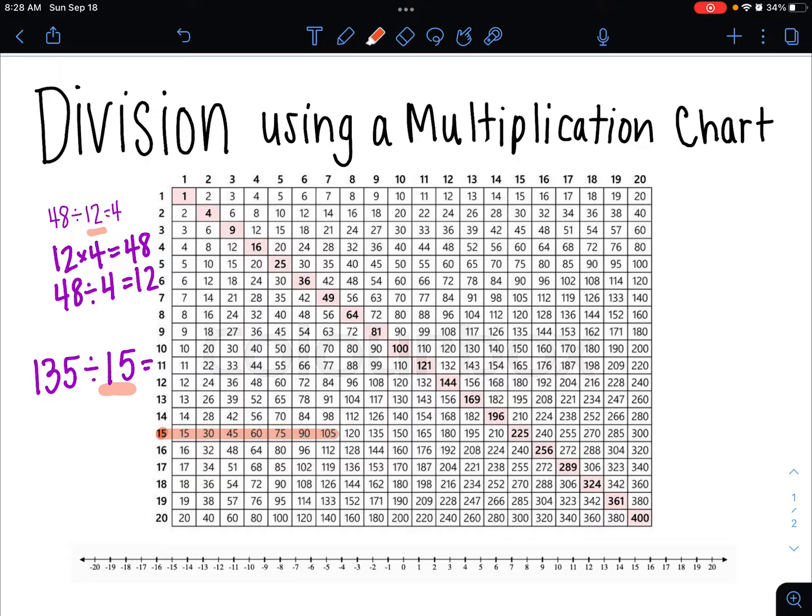45, 60, 75, 90, 105, 120. Oh, there's 135. So we're looking straight to the top, and we get the number 9.